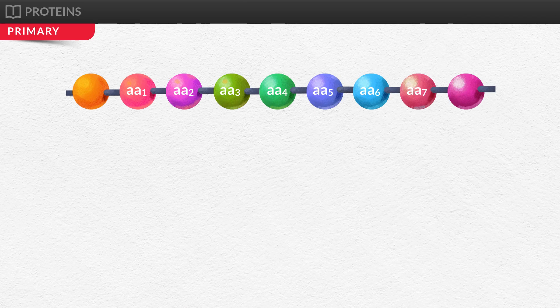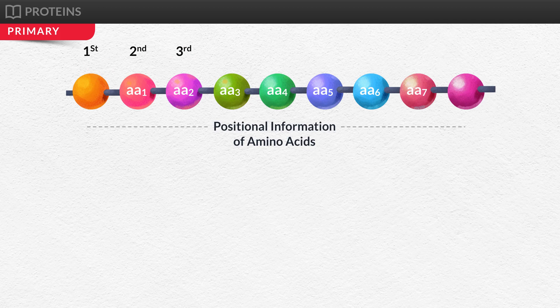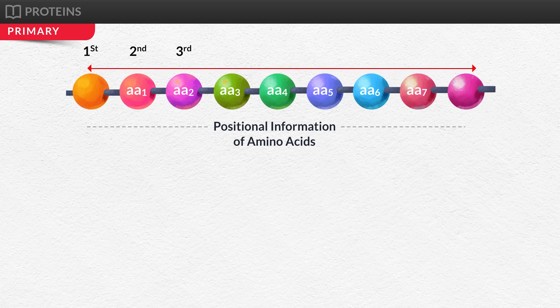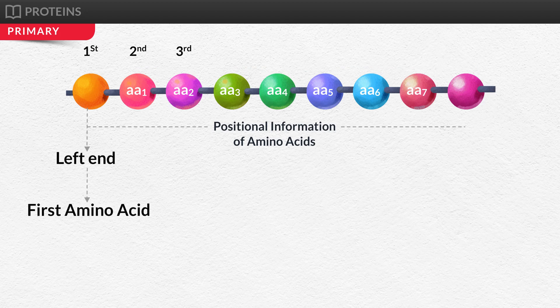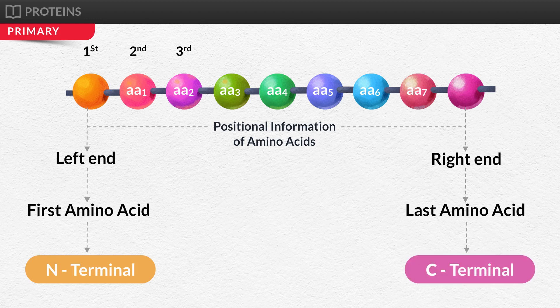Primary structure refers to the sequence of amino acids arranged in a polypeptide chain. It gives the first, second, third information of amino acids known as positional information of amino acids in a protein. Hypothetically, a protein is represented as a straight line formed by amino acids, where the left end is represented by the first amino acid and the right end is represented by the last amino acid. First amino acid is known as N-terminal amino acid and the last is known as C-terminal amino acid.